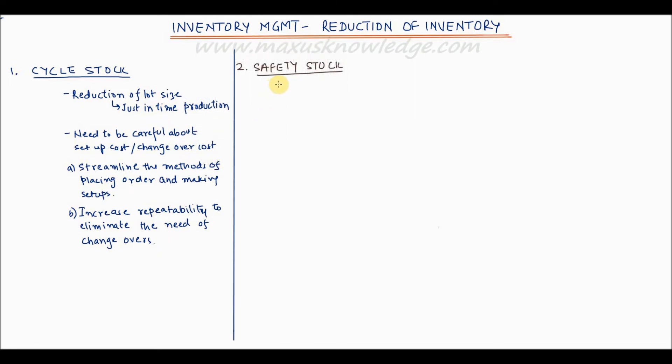Now let us look at the second type of inventory, which is safety stock. Safety stock is kept to prevent shortages due to uncertainties in demand and supply. For example, sudden spike in demand or suppliers' inability to deliver the product on the date that they have promised.